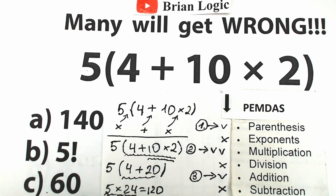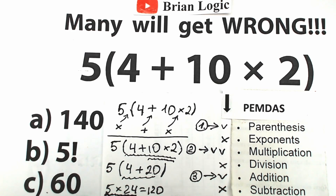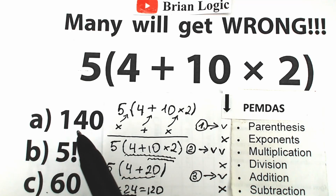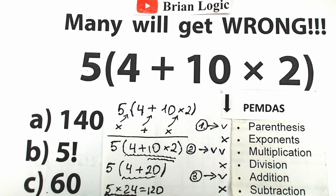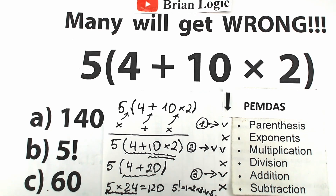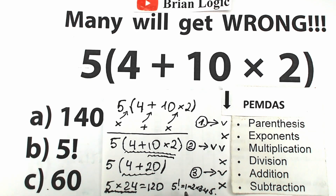I hope you understand this. The answer to this challenge is 120. Now let's look at the options: we have 140, 5 factorial, and 60. It's not A, and not C. What about option B? Let's recall factorials. 5 factorial equals 1 times 2 times 3 times 4 times 5. So: 1×2=2, 2×3=6, 6×4=24, 24×5=120. So 5 factorial equals 120. Option B is the correct answer.